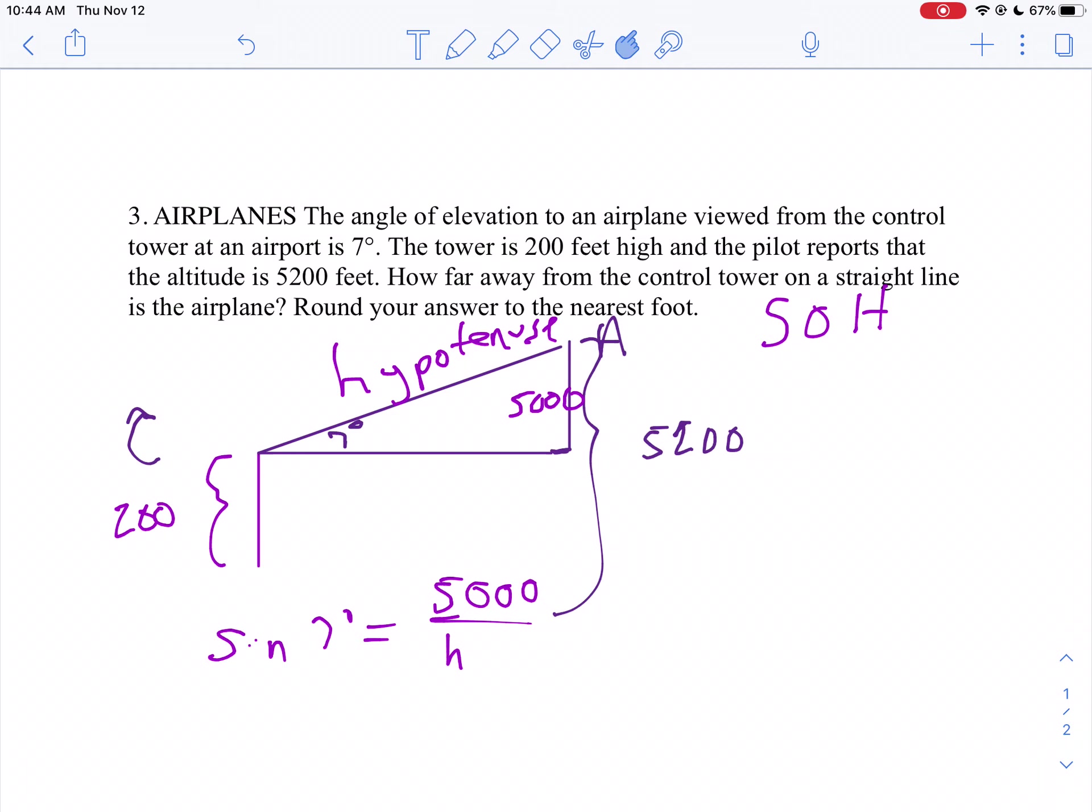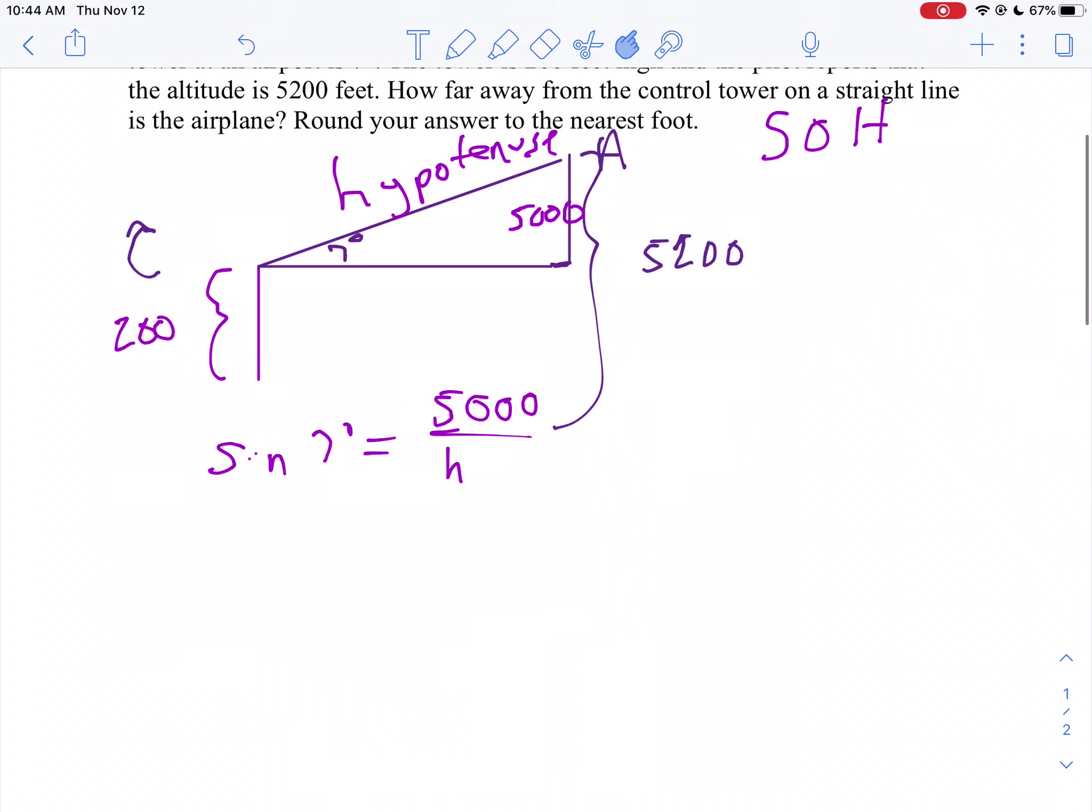Now, h is in the exact wrong spot for me to solve this problem. I don't like h in the denominator. So I'm going to take the reciprocal. The reciprocal of 5,000 over h is h over 5,000. I've got to take the reciprocal of the left-hand side. How do you take the reciprocal of the sine of 7 degrees? Right now, it's sine of 7 degrees over 1. So I'm going to say 1 over the sine of 7 degrees.